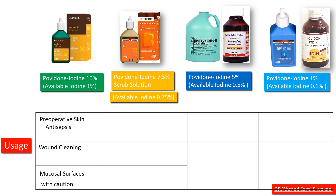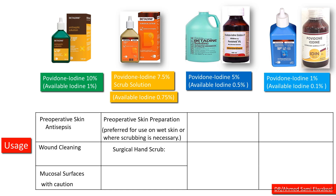Povidone iodine 7.05% scrub solution is used for surgical hand scrubbing due to its effective anti-microbial action. It can be used similarly to the 10% solution, but is often preferred for use on wet skin or where scrubbing is necessary.